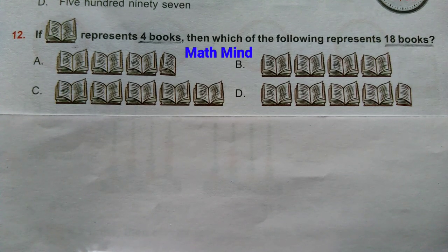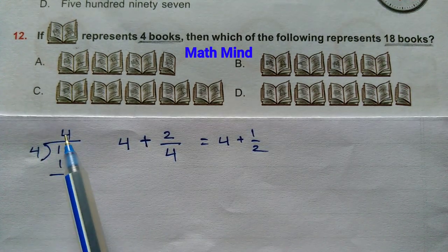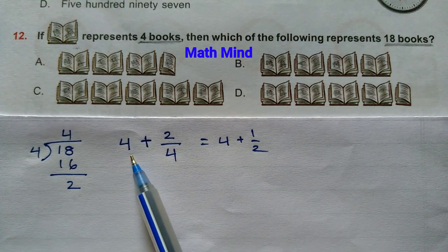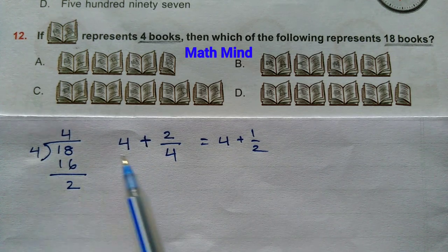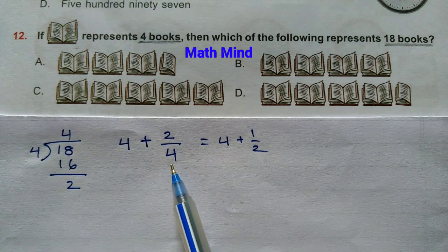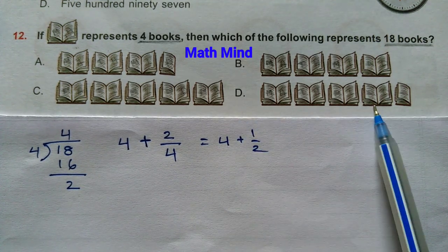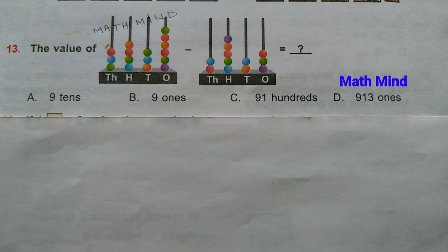Question number 12: If one book symbol represents 4 books, then which of the following represents 18 books? 18 divided by 4 gives 4 as quotient and 2 as remainder. So the answer is 4 and 2/4, which simplifies to 4 and 1/2. Option D is correct: 4 and a half.